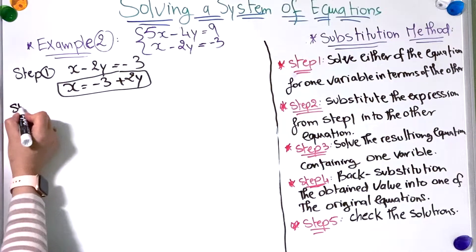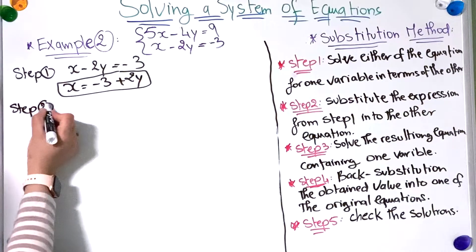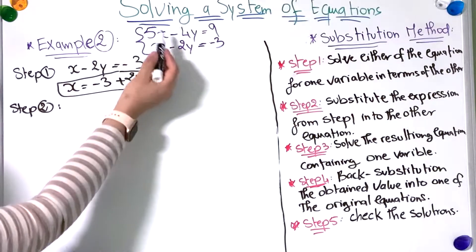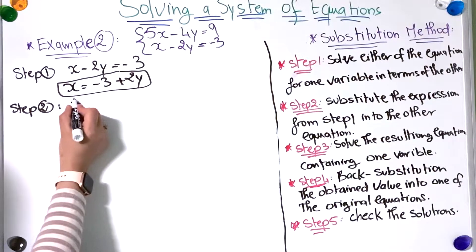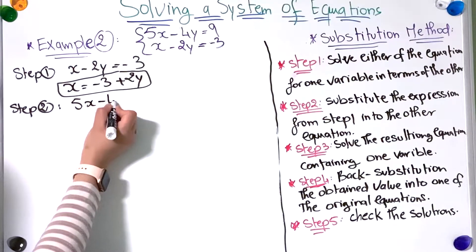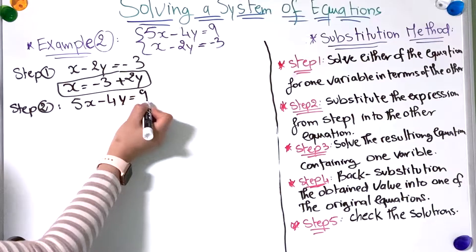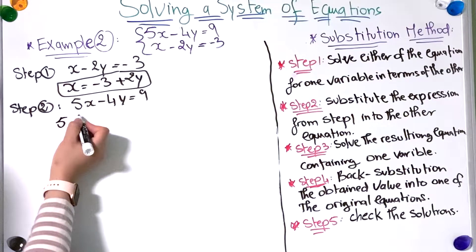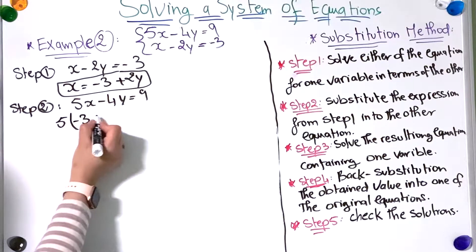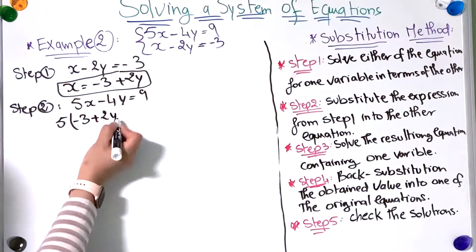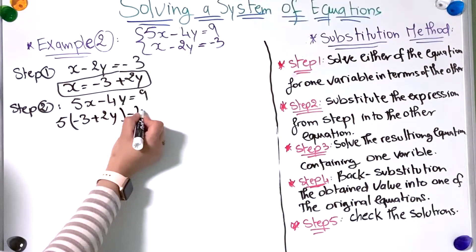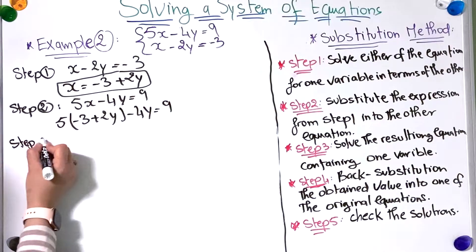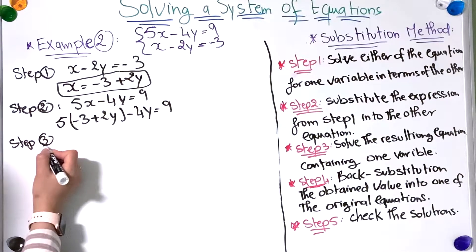In the second step, I'm going to replace x with this expression in the first equation, which is 5x minus 4y equals 9. So 5 times (minus 3 plus 2y) minus 4y equals 9.